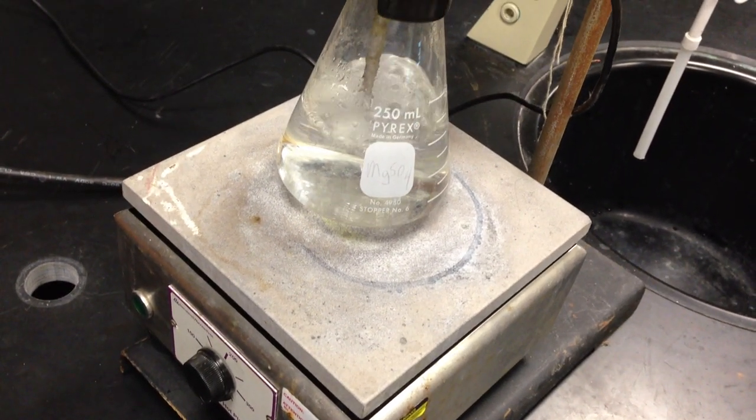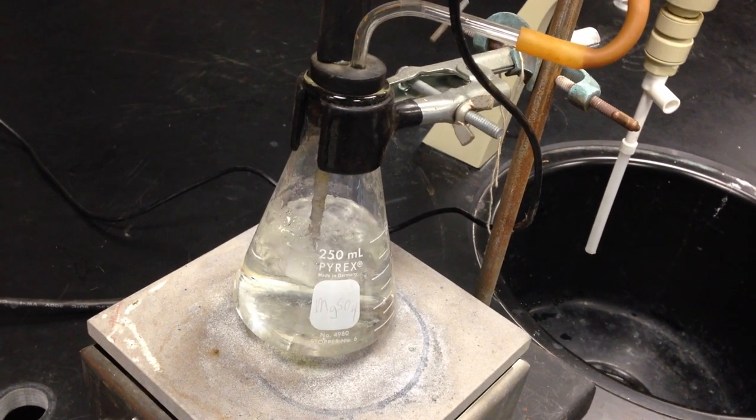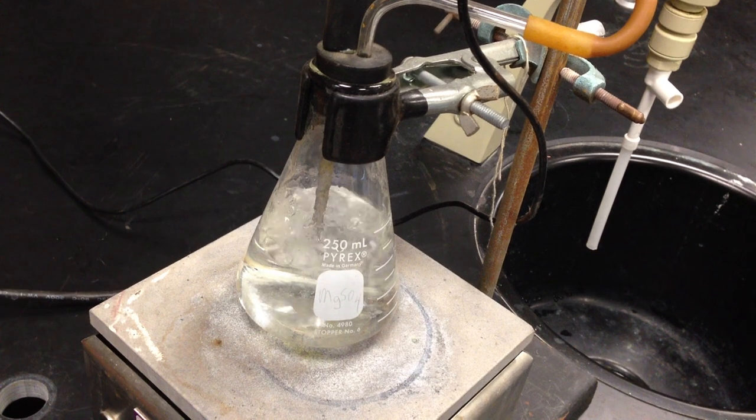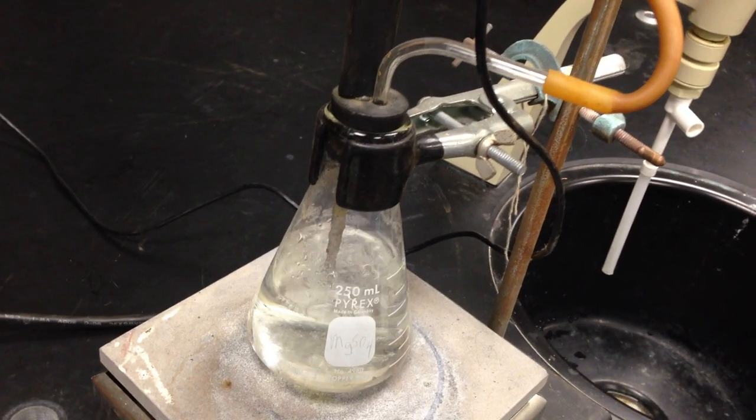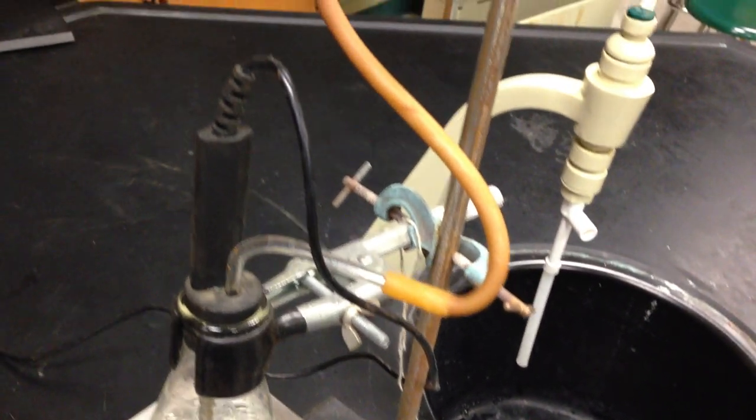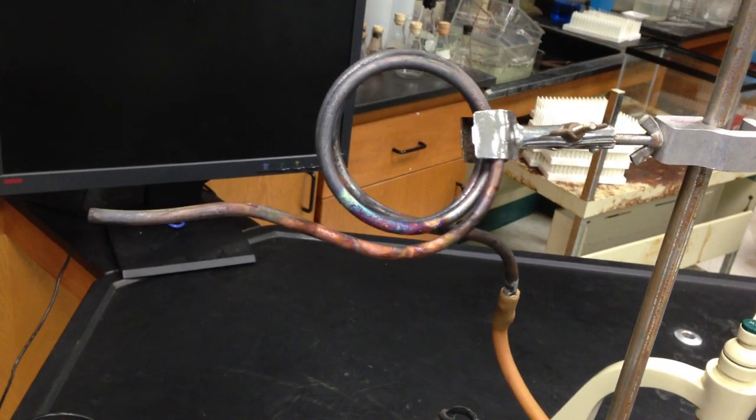The energy of the hot plate is being absorbed by the water. The water is using that energy, converting kinetic into potential and creating a gas. That water vapor is traveling up this tube into these copper coils that are badly oxidized.